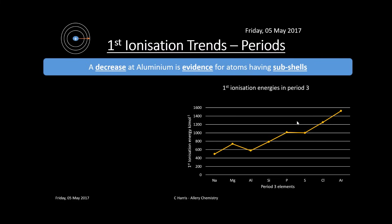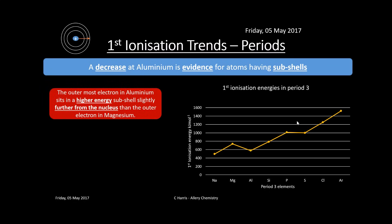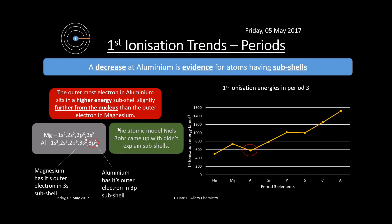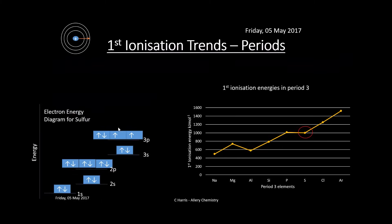The first exception is a decrease at aluminium — this is evidence for subshells. The outermost electron in aluminium sits in a higher energy 3p subshell, slightly further from the nucleus than magnesium's outer electron in 3s. Aluminium has a 3p¹ electron that magnesium doesn't; because it's slightly further away and slightly shielded by the 3s orbital, less energy is needed to remove it. Magnesium's outer electrons are in the 3s orbital. Bohr's model didn't explain this.